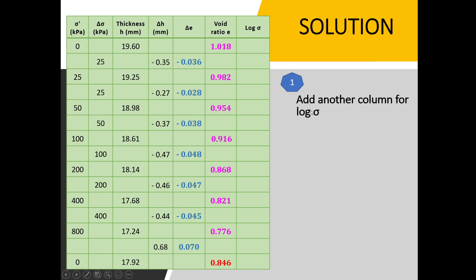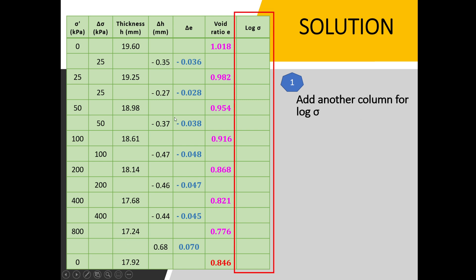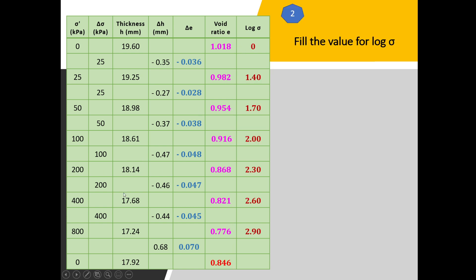As you can see, we have added another column for the log stress — you can add it at any column that is easier for you to refer to. Fill in the values for the log stress. Note that when you press log of zero you will get a math error, so just put zero here in order to plot the graph. The log of 25 is 1.4, up to log of 800 is 2.9. This is only for the loading condition.